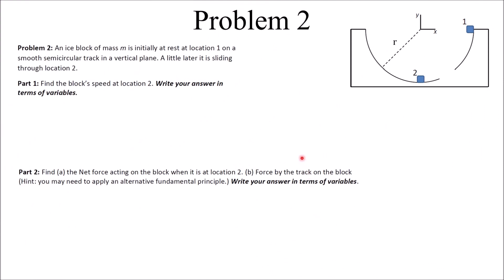The last problem: we have an ice block at position one, at rest initially, coming down to the bottom at position two. We have some height relative to the bottom (which is our reference at zero), and some radius to this circle. Our goal in part one is to find the block's speed at location two — it's gaining kinetic energy as it falls down.